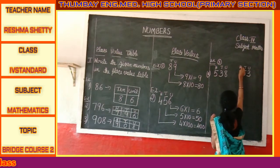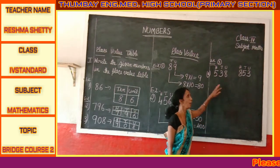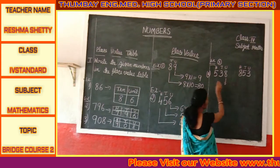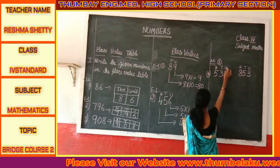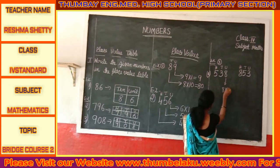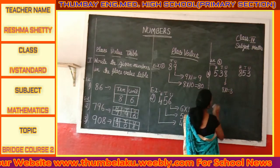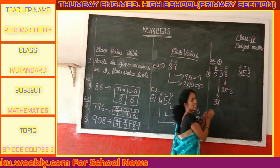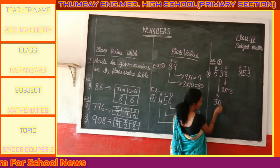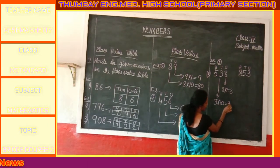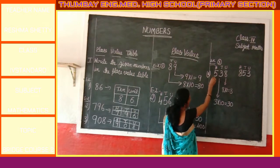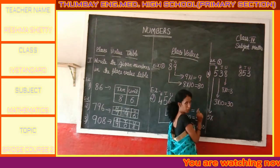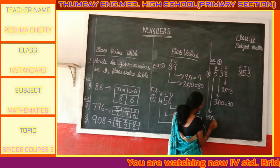In 835, let's find the place value. 8 is in the unit place, so 8 multiplied by 1 equals 8. The place value of 8 is 8. 3 is in the tens place, so 3 multiplied by 10 gives the place value of 30. 5 is in the hundreds place, so 5 multiplied by 100 equals 500.